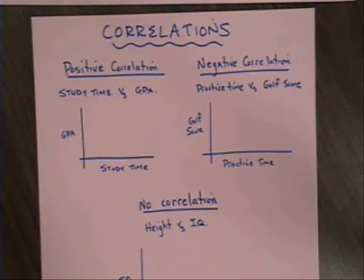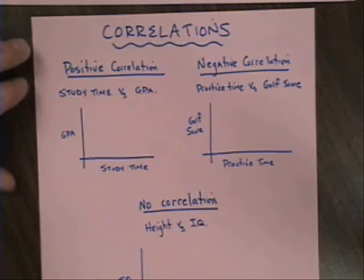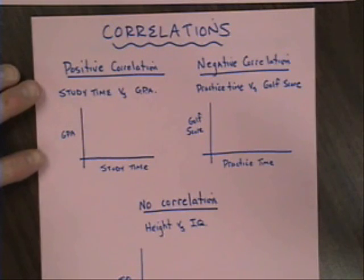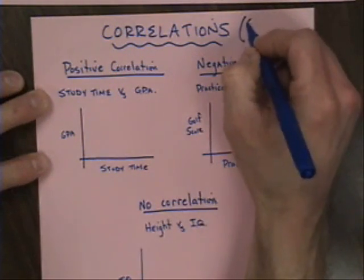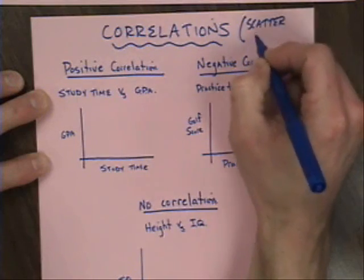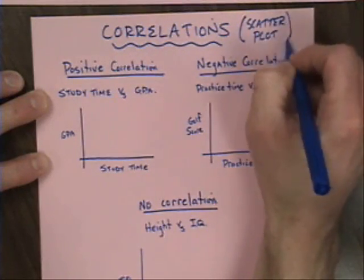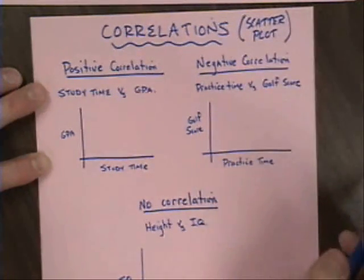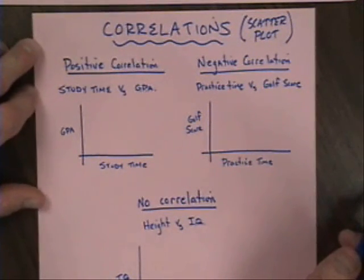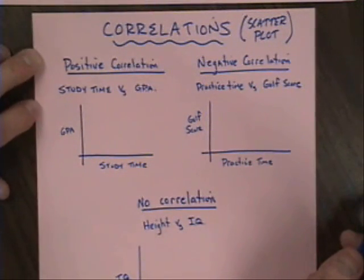I'd like to talk briefly about correlations. We mentioned them in class, and when we talk about correlations, we're talking about relationships between two variables, often represented with a scatterplot. Scatterplots are excellent for determining trends, finding correlations, and seeing if two things are related to one another, and if so, how they interact.